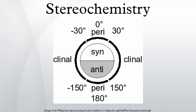Thalidomide is currently used for the treatment of other diseases, notably cancer and leprosy. Strict regulations and controls have been enabled to avoid its use by pregnant women and prevent developmental deformations. This disaster was a driving force behind requiring strict testing of drugs before making them available to the public.